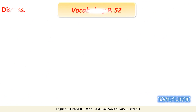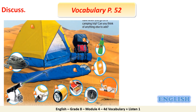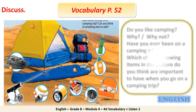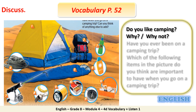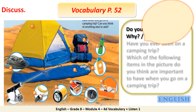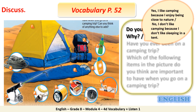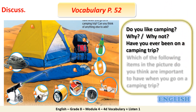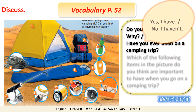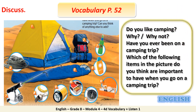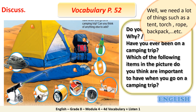Open your student book page 52, vocabulary. Look at the 12 items in this picture, then discuss the following questions. 1. Do you like camping? Why or why not? Yes, I like camping because I enjoy being close to nature. Or no, I don't like camping because I don't like sleeping in a tent. 2. Have you ever been on a camping trip? Yes, I have. Or no, I haven't. 3. Which of the following items do you think are important to have when you go on a camping trip? We need a lot of things such as a tent, torch, rope, backpack, etc.